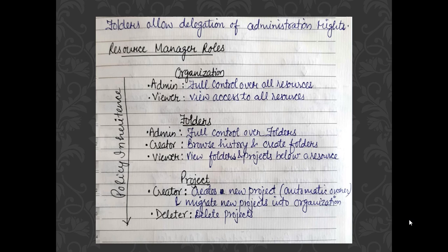Whatever roles are associated with a folder are fully restricted to that folder only and should not be inherited by other folders. For resource manager roles, folders are provided with more roles than the organization node. A folder can have an admin role for full control, a creator role to browse the history and create new folders, and a viewer role to view the folders and projects lying below a particular resource.